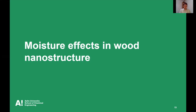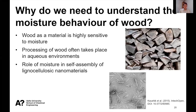Now we go to the last major topic: moisture effects in wood nanostructure. Why is it important to understand these things? The nanoscale structure is very important for the material properties of wood. Wood is also highly sensitive to moisture — if you have a dry piece of wood and wet it, it becomes soft; if you dry wood from the native state, it can form cracks. A lot of processing of wood also takes place in aqueous environments, so it's very important to know where the water exists in the structure.